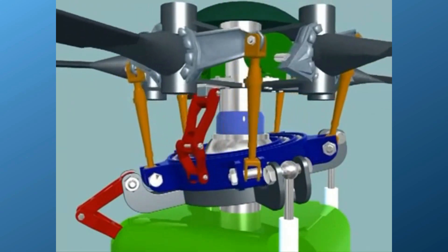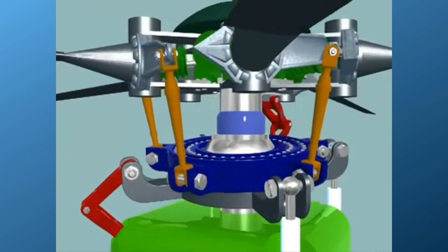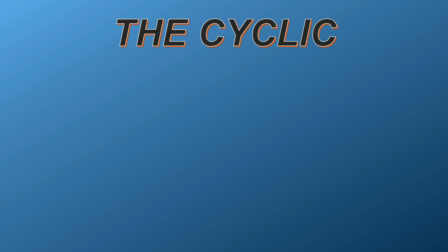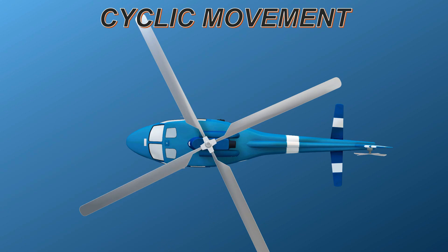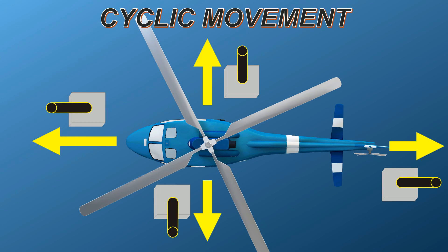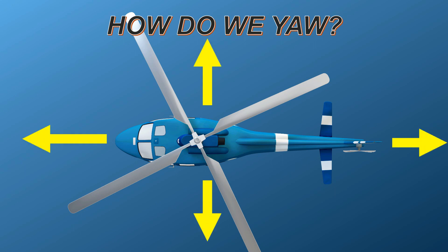To control the tilting of the swash plate, the pilot has a control called the cyclic. The cyclic is similar to a joystick and is positioned at the center of the pilot. In simple terms, the cyclic controls the lateral movement of the helicopter. Moving the cyclic left or right changes the lift vector so the helicopter moves left or right. Likewise, moving the cyclic forwards or backwards moves the helicopter forwards or backwards. So we now know how the helicopter is moved laterally — backwards and forwards, and side to side.